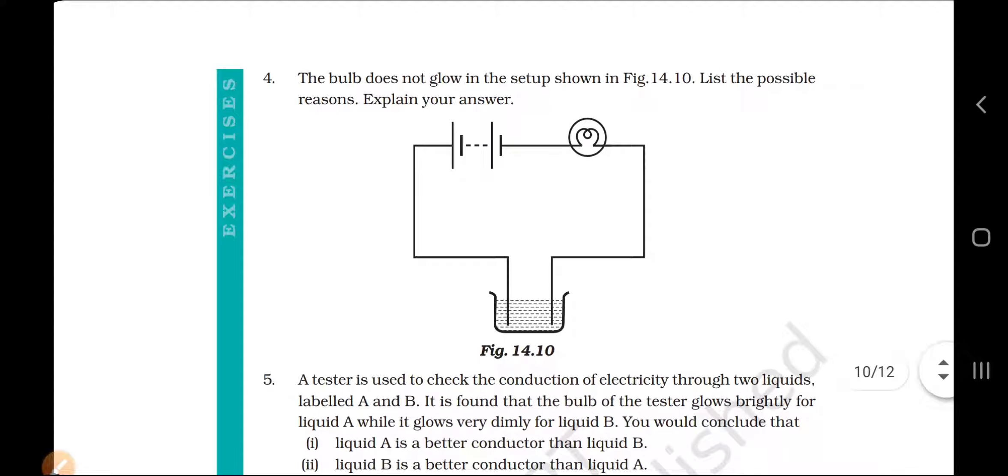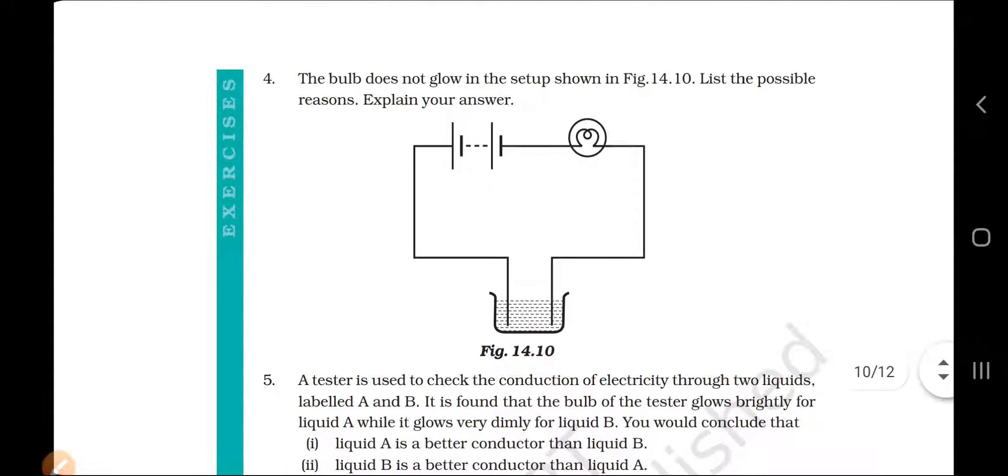So what are the 5 reasons due to which the bulb is not glowing? Number 1, it is a non-electrolyte or it is a weak electrolyte. Number 2, number 3, the battery is exhausted. It may be dead. Number 4, the bulb may be fused. And number 5, the wires are not connected properly.